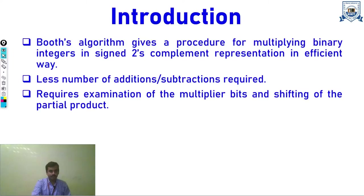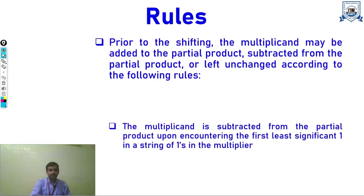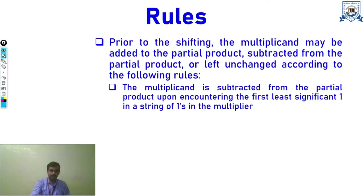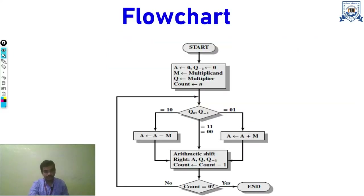The shifting used here is arithmetic right shift, in which we copy the sign bit as it is, and all the bits are shifted right by one. Prior to shifting, the multiplicand will be added, subtracted, or remain unchanged depending on some rules. These rules can be seen more easily in the flowchart.